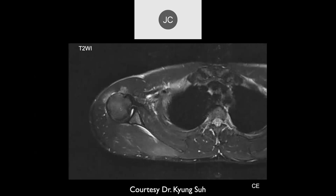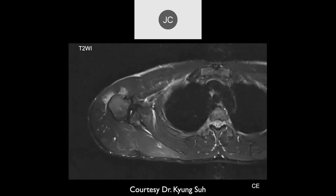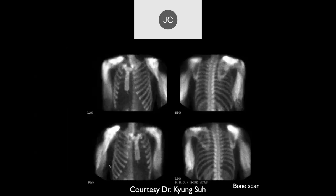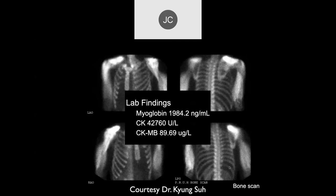There may be some fluid along the infraspinatus as well, and also in the deltoid. With contrast enhancement, more medially. On the bone scan, we see diffuse uptake in the muscles, probably bilaterally.